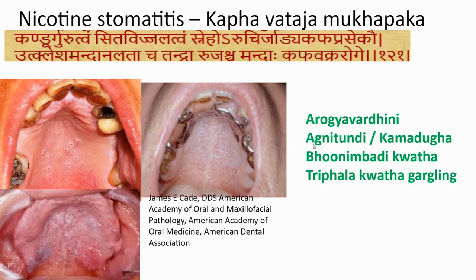The most important management for nicotine stomatitis would be avoiding nicotine — absolutely essential. Many patients respond very well once nicotine is stopped. If it doesn't yield, my prescription would be Aragivarthini and Agnitundi or Kamaduga, depending upon the presentation. When there are more Pittaja Lakshanas, I prefer Kamaduga. When there are relatively more Vata or Kapha Lakshanas, I prefer Agnitundi and Bhunimbapatika Vata, because it is always related to Amlapitta. This is exactly what Sushruta has mentioned as Kapha-Vataja Mukhapaka, though clinically we can see presentations with Pitta Lakshanas too. Triphala Kwata gargling is another important remedy.